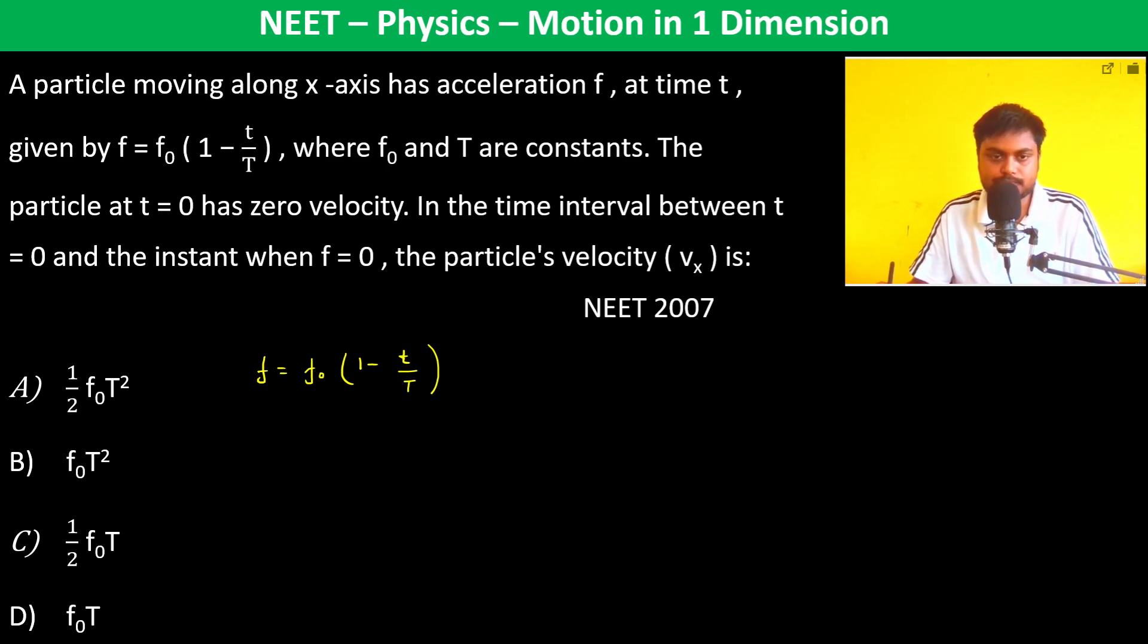So this is acceleration. Now acceleration is dv upon dt, so we can write dv equals f dt, which is f₀(1 minus t by T) into dt.